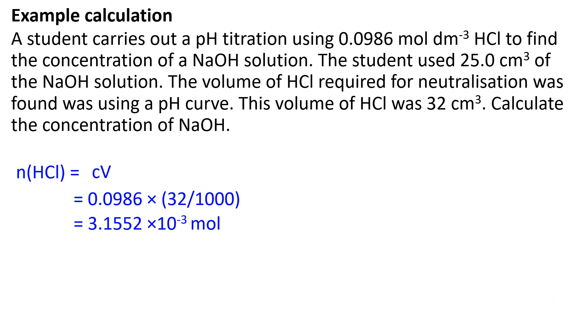First, calculate the amount in moles of HCl using concentration and volume. This works out to be 3.1552 × 10⁻³ moles.